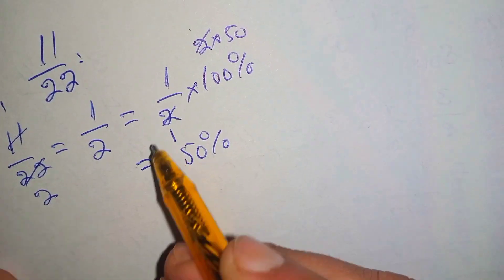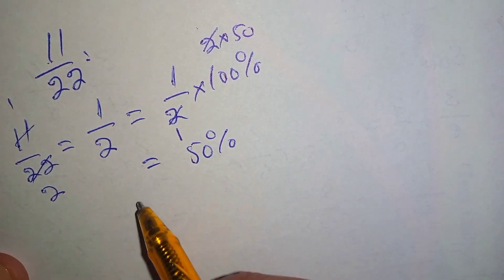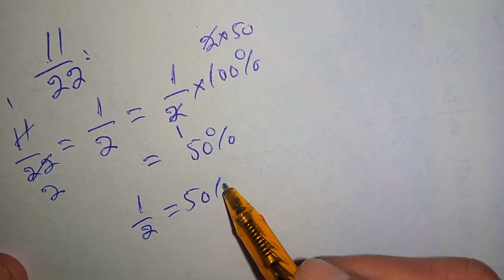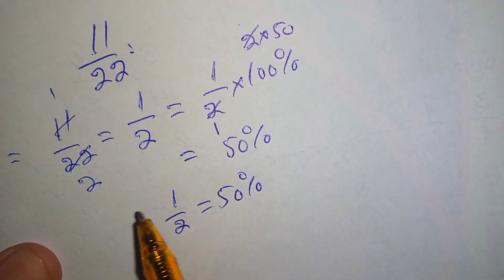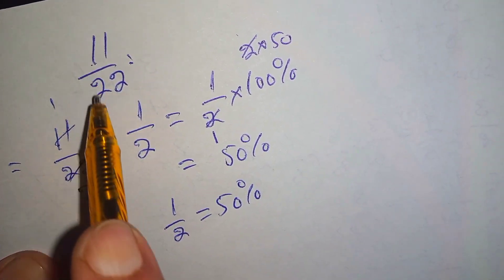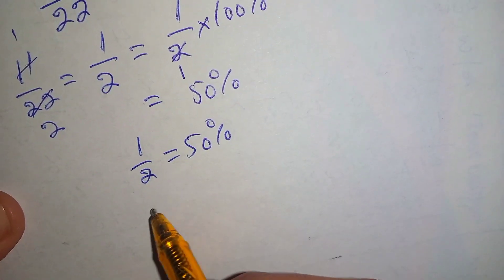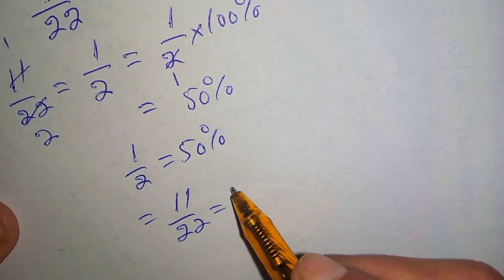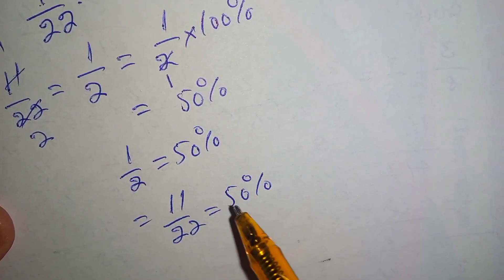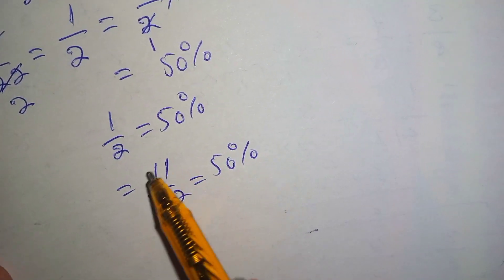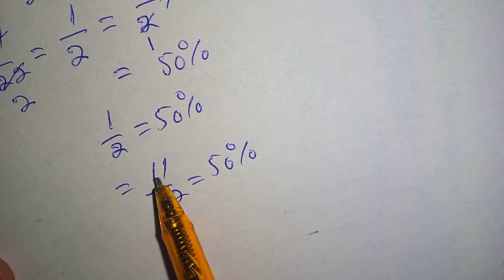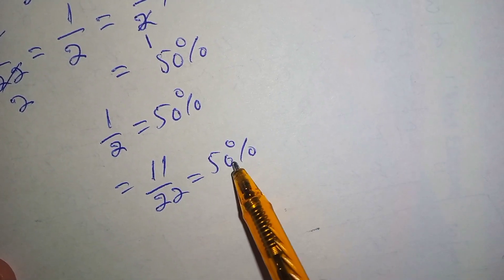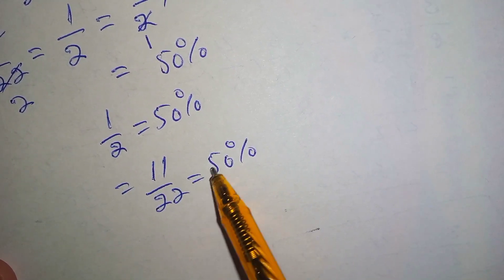The remaining term is 50 percent. So 1 over 2 is equal to 50 percent. And since 1 over 2 is equal to 11 over 22, we can say that 11 over 22 is equal to 50 percent. We have converted the proper fraction 11 over 22 into a percentage, which is 50 percent.